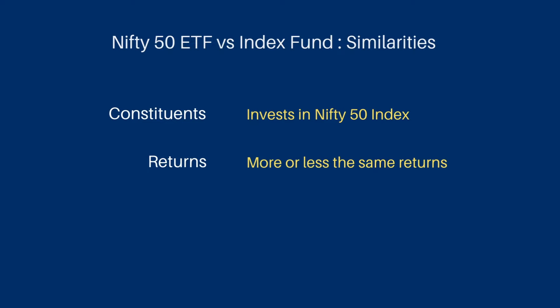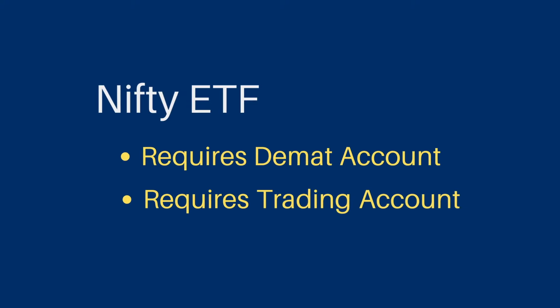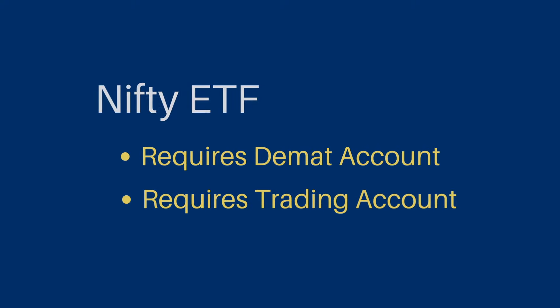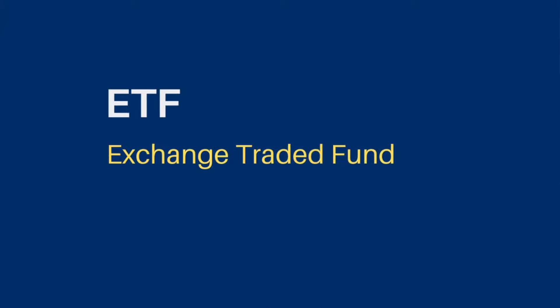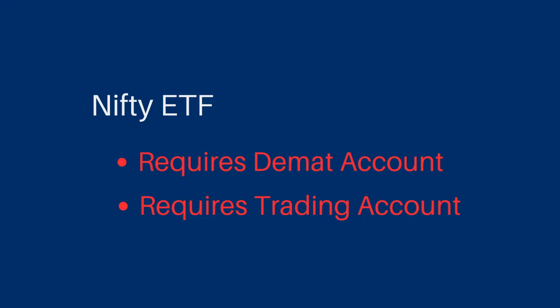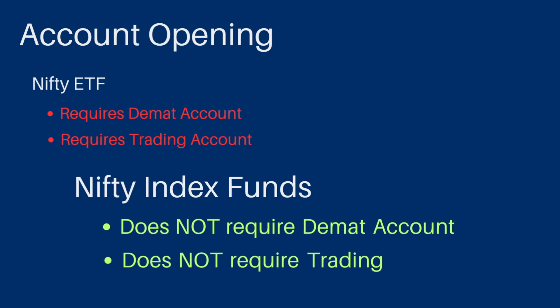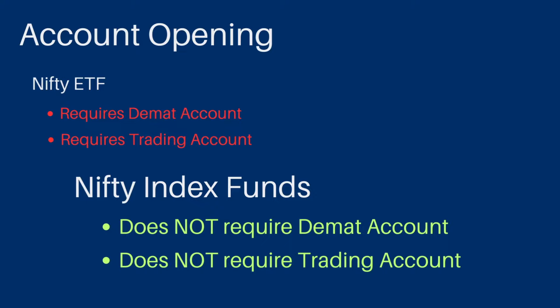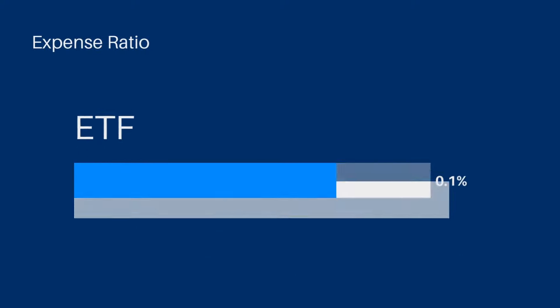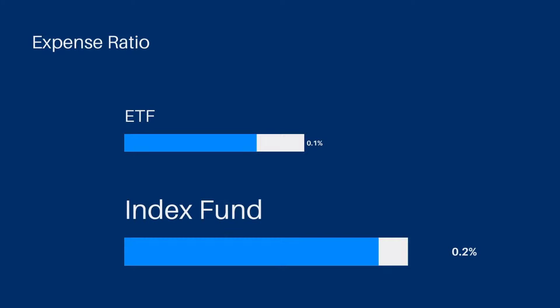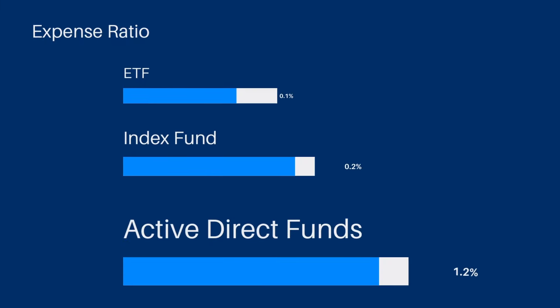If you invest in an ETF, you need a demat account or a trading account. ETF stands for Exchange Traded Fund — you can trade it on the exchange. If you trade through a brokerage account, you will need a demat account. For index funds, you can invest directly through a mutual fund provider without a demat account. The next difference is the expense ratio — in general, ETFs have a lower expense ratio compared to index funds.